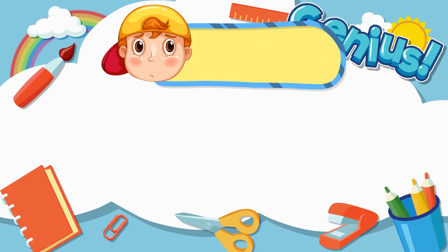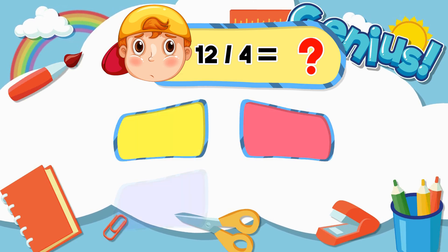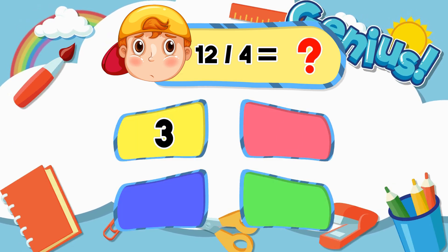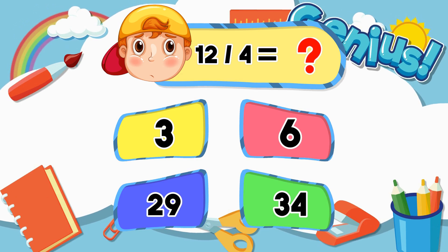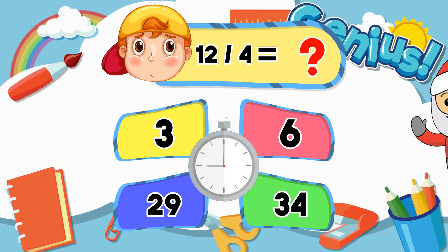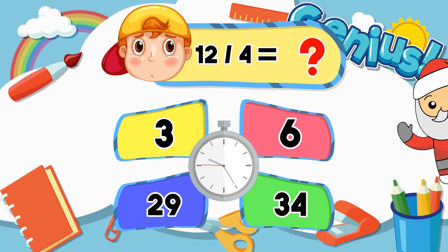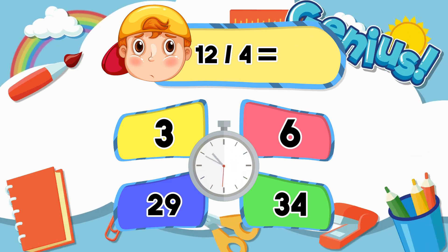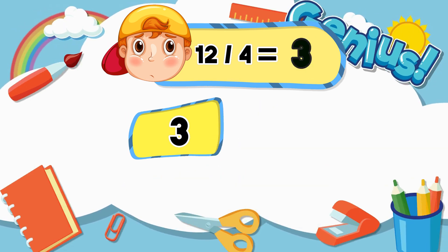What is 12 divided by 4? 3, 6, 29, 34, 3.